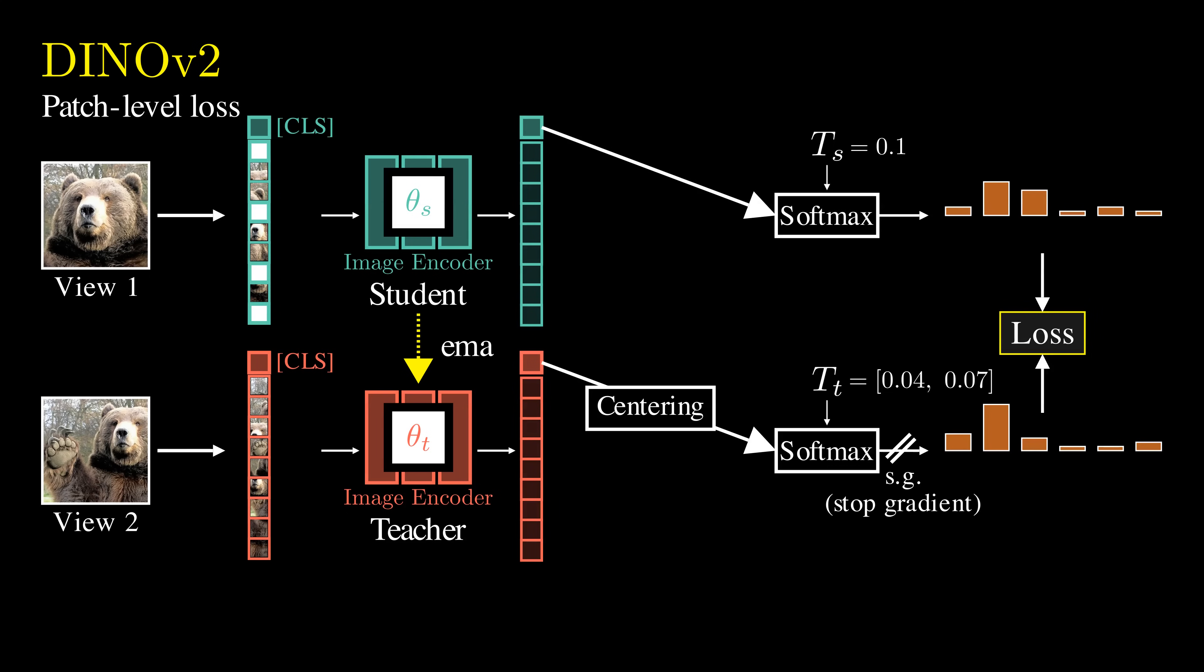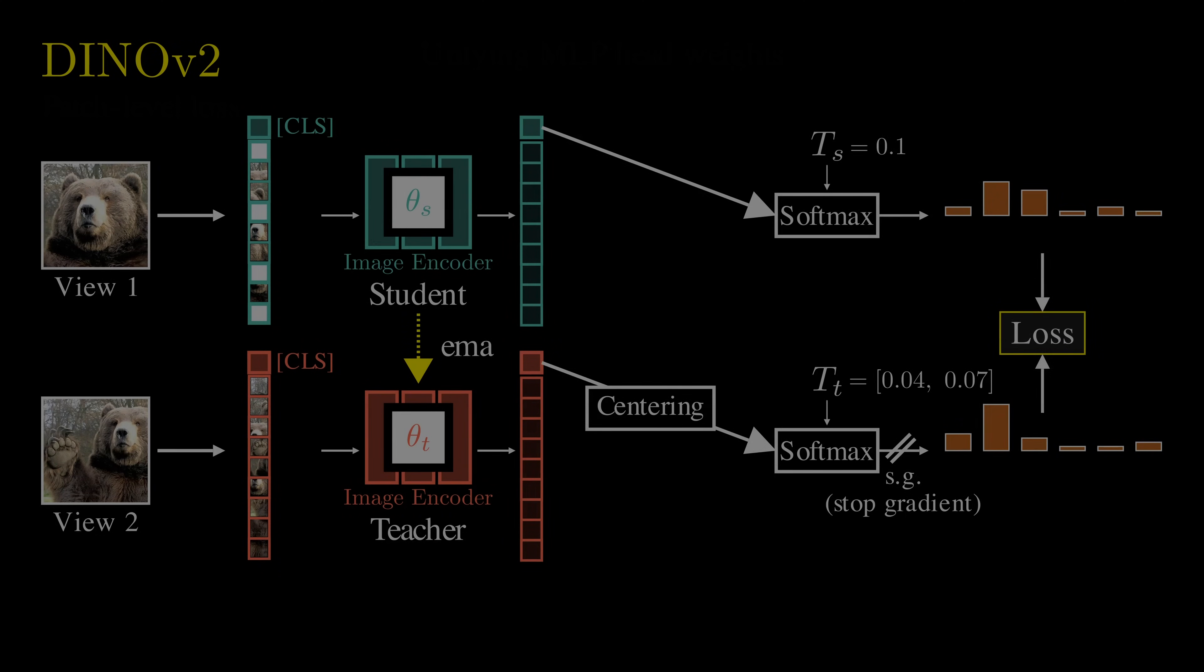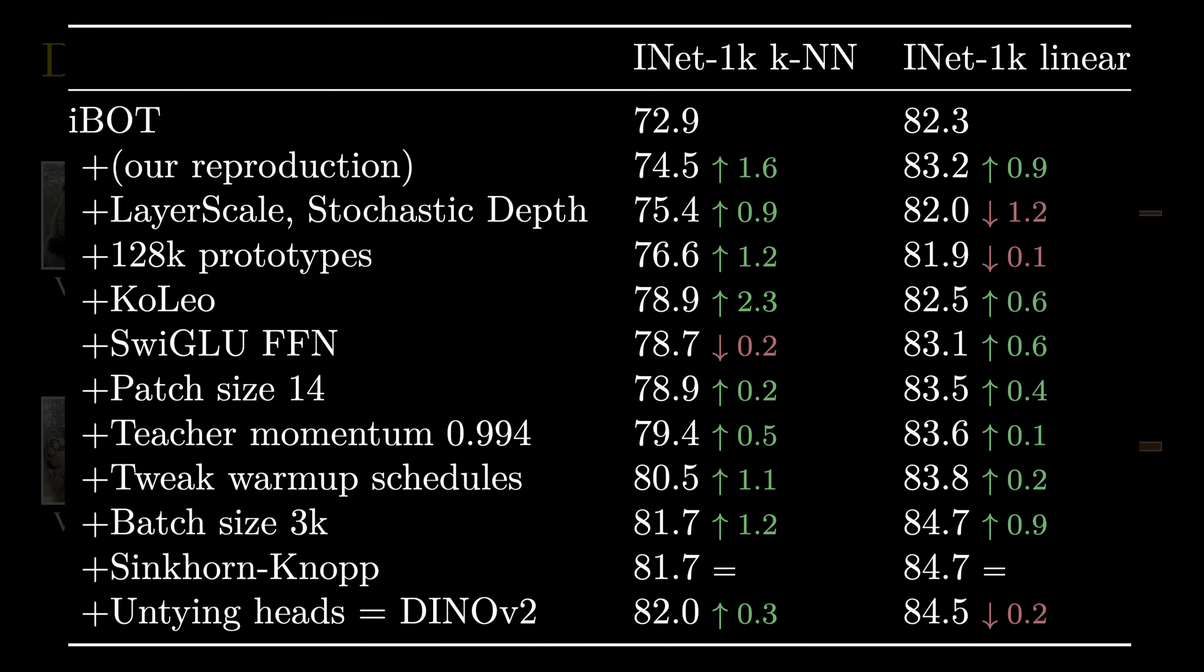Now we randomly mask out some input patches for the student, but not for the teacher. We then introduce a patch level loss. This encourages the student model's predictions for the masked tokens to align with the teacher model's predictions for the corresponding visible tokens. It helps the student model to learn fine-grained patch level features. Both image level and patch level losses use MLP projection heads with the same design, but each has its own separate parameters. This evaluation study demonstrates how each technique incrementally contributes to improving overall performance.